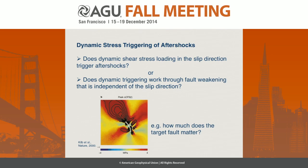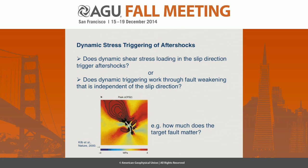I'm going to talk about dynamic stress triggering. I've seen a number of lines of evidence that convince me that dynamic aftershock triggering is at least a contributor to the triggering of aftershock sequences, including the observation that sometimes when you have directivity in an earthquake, you can see that directivity also in the triggered aftershocks. This talk isn't going to try to convince you of dynamic aftershock triggering, but rather accepting that it occurs, and asking the question of the mechanism behind it. Essentially, does dynamic aftershock triggering work through shear stress loading in the direction of slip of the triggered earthquake, or does it work through some sort of fault weakening mechanism that's not actually dependent on that direction of slip?